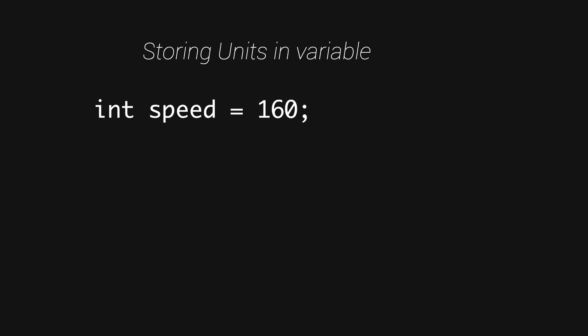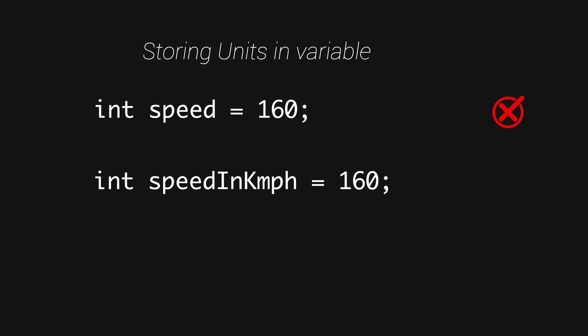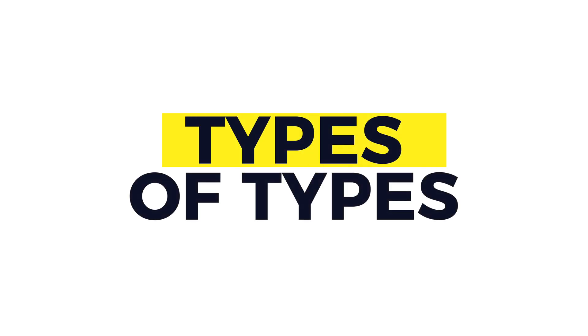Include units in your variable names when dealing with unit information — whether metric or imperial. If you're storing speed, specifying whether it's in kilometers per hour or miles per hour gives much better understanding of how your code is dealing with the data, rather than just calling it 'speed'. Adding units to variable names in such scenarios will help you in the longer run.